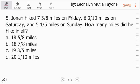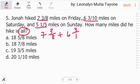Number 5. Jonah hikes 7 and 3 eighths miles on Friday, 6 and 3 over 10 miles on Saturday, and 5 and 1 fifth miles on Sunday. How many miles did he hike in all? Ibig sabihin, ipang-add lang natin ito. So, this is 7 and 3 over 8 plus 6 and 3 over 10 plus 5 and 1 fifth.